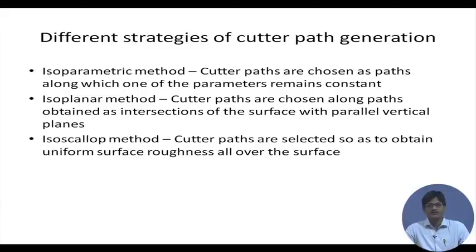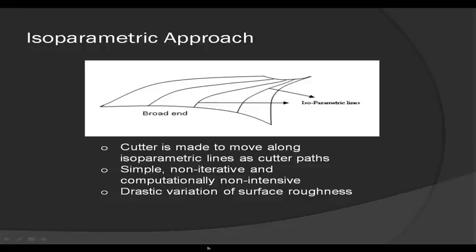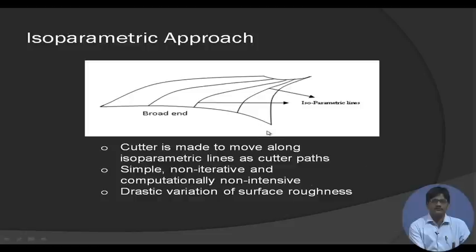In the isoparametric method, cutter paths are chosen as the isoparametric lines themselves. Since these lines are easy to find and determine, the process is computationally non-intensive. We would always try to resort to this method if there are no other problems — but the very shape of the surface can create issues. For example, if we must cut from one particular side, the cutter paths may not align favorably with the isoparametric lines.